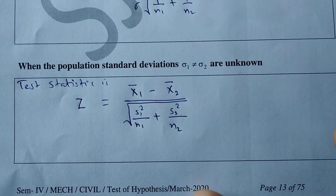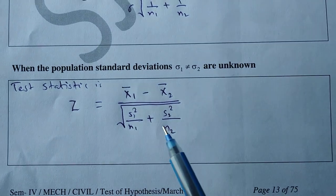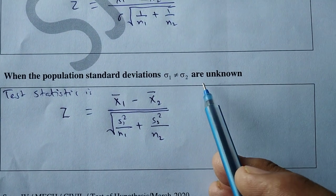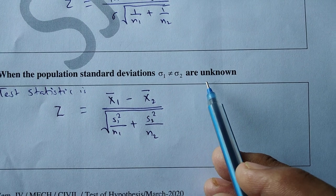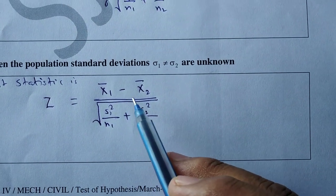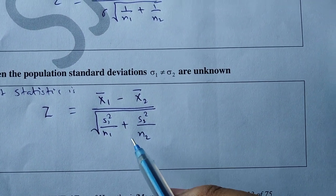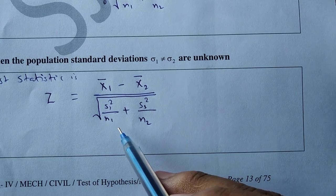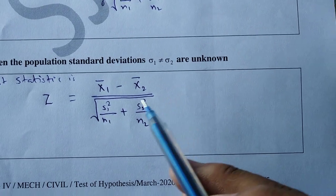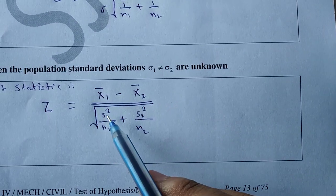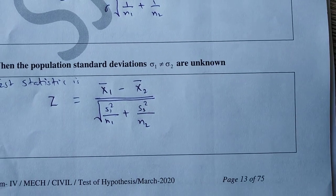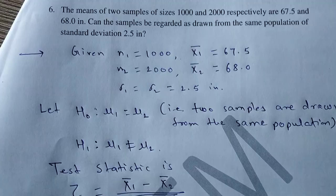Case 3: when population standard deviations sigma1 and sigma2 are unknown and unequal, Z is x1 bar minus x2 bar divided by the square root of s1 square by n1 plus s2 square by n2, where s1 and s2 are the standard deviations of the samples.